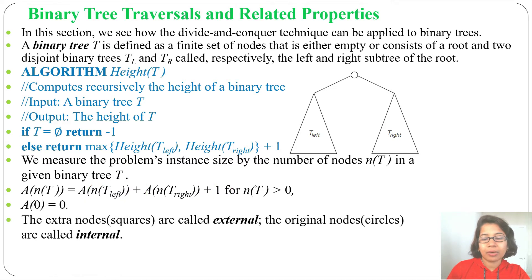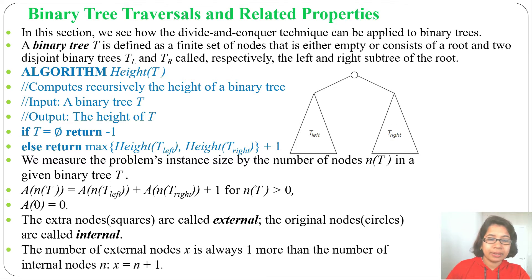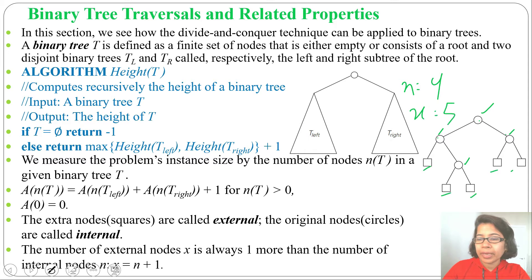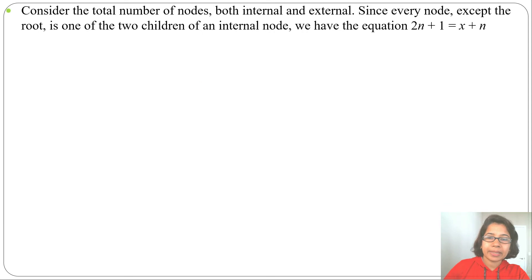The extra nodes are called external, or leaf nodes, and the original nodes are called internal. The number of external nodes is always one more than the number of internal nodes. Looking at this diagram, the internal nodes number 4 — so N equals 4 — and the external nodes number 5 — so X equals 5. Therefore, the number of external nodes always equals the number of internal nodes plus 1, giving us X equals N plus 1.